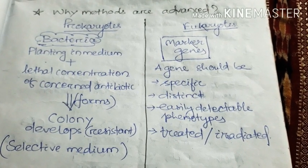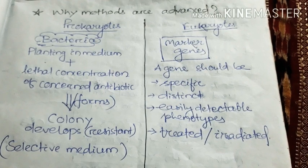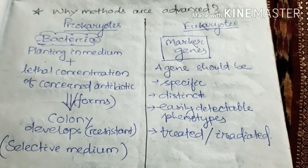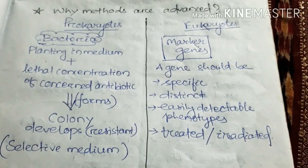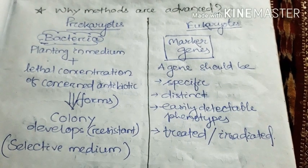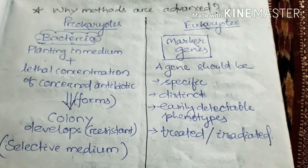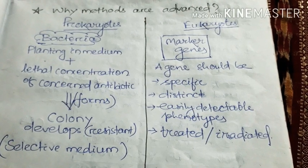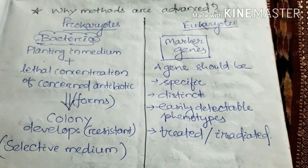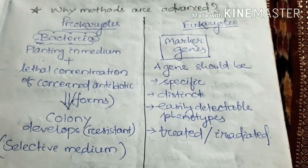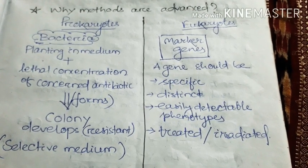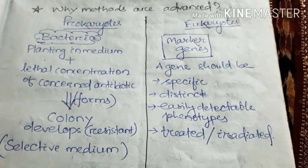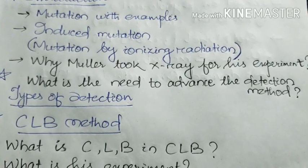In 1928, Herman J. Muller devised a method of searching for lethal mutations on the X chromosome in Drosophila. We will read about this in detail later.